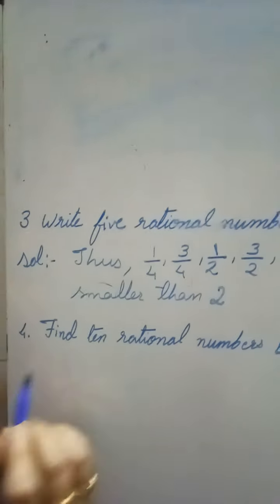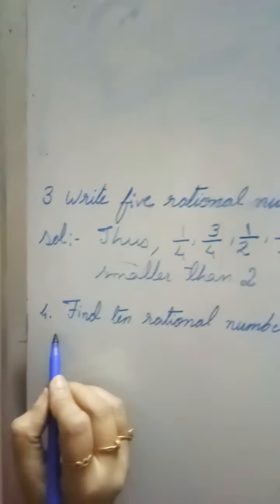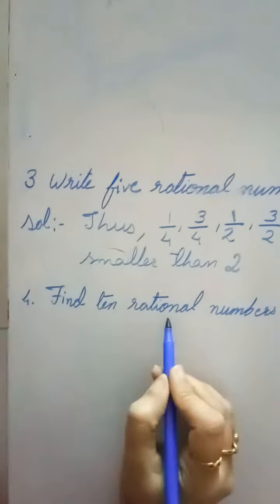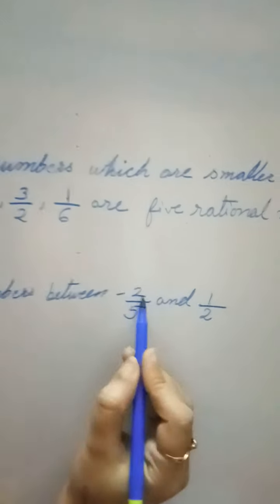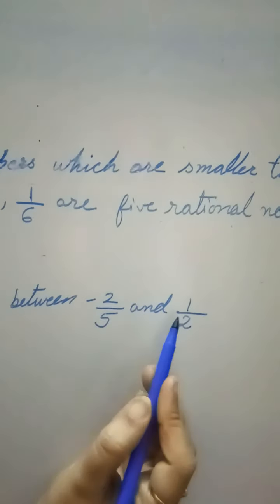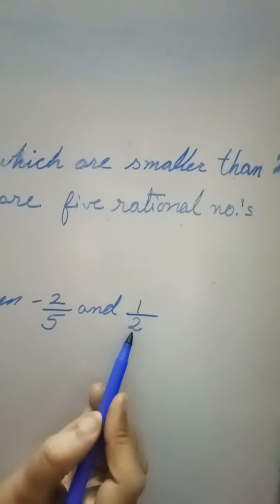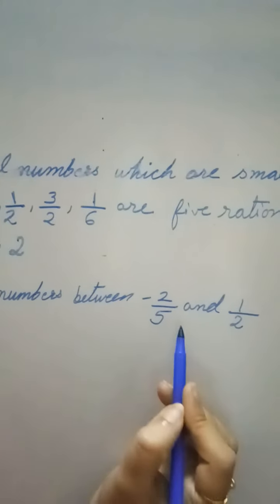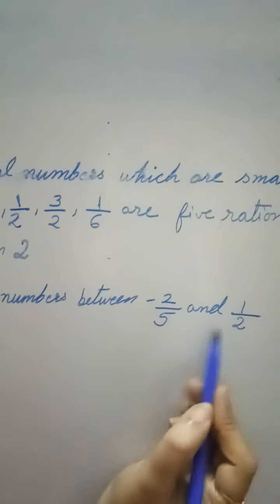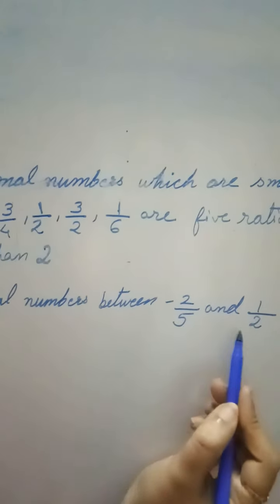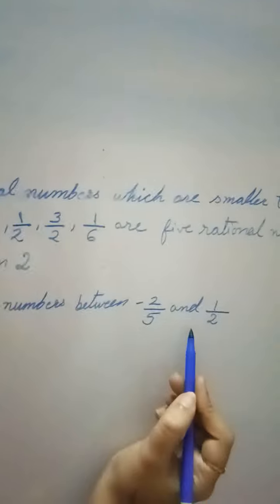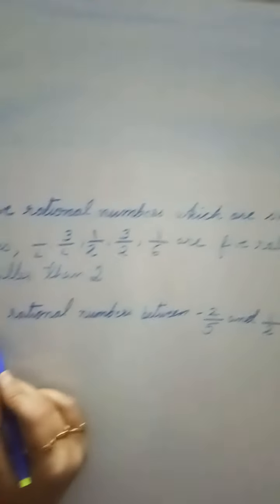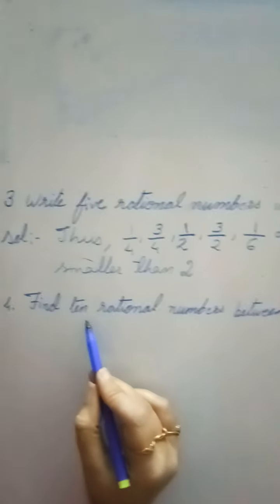Same way, next question: find 10 rational numbers between -2/5 and 1/2. Again very logical — how many numbers are there between these two numbers? There are infinite, but you have to find how many? 10.